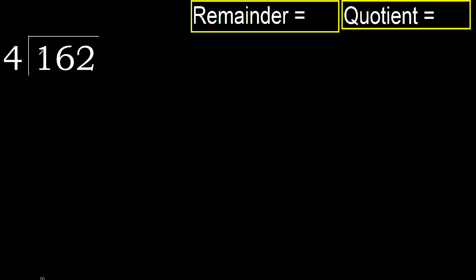162 divided by 4. 1 is less, therefore next. 16 is not less, therefore with 16. 4 multiplied by which number is nearest to 16.